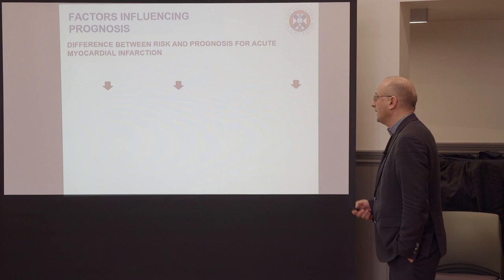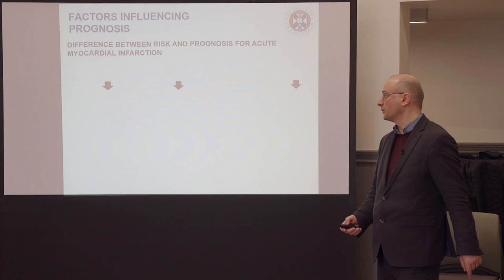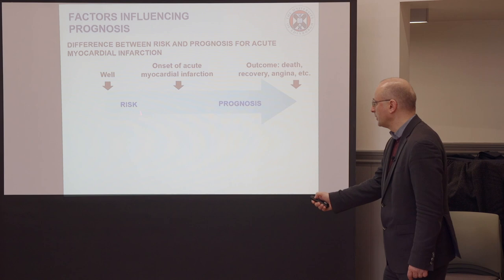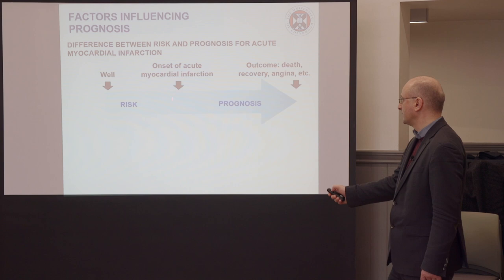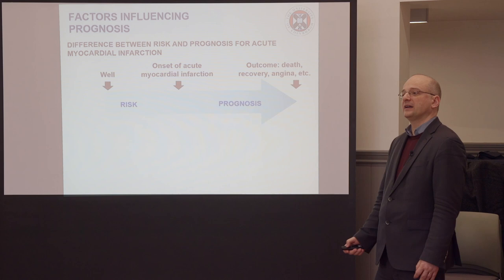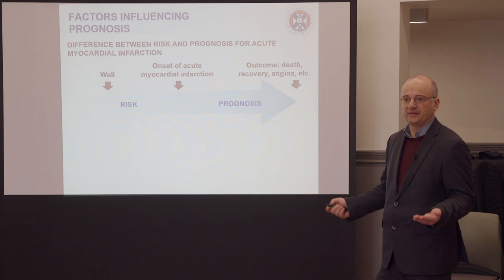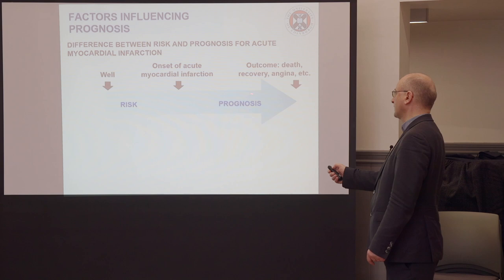Going back to what I told you — you need to ask yourself what you're talking about. You start off being exposed to some risk factor, then you have the onset of disease, and then you no longer call them risk factors, you actually start calling them prognostic factors. They are risk factors for having a bad outcome of the disease once you got it. We call them risk factors before onset and prognostic factors after onset, and then there is the outcome of the disease.